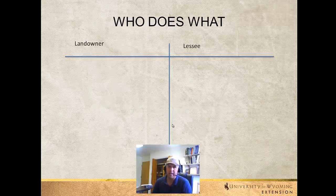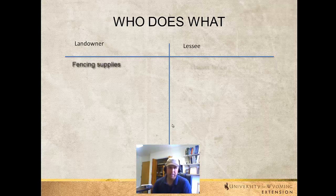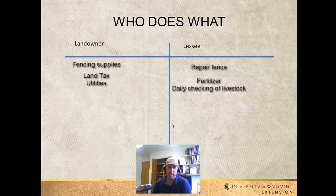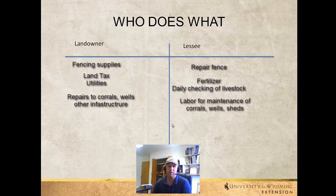An important thing to consider is who does what, and this is a great thing for the landowner and the lessee to sit down and go through together. A simple chart with the landowner on one side and the lessee on the other works well. On the landowner side you might see: paying for fencing materials while the lessee does the labor to repair the fence or walk the fences at the start of the year. The landowner is also probably responsible for paying taxes on the land and utilities. The lessee is probably responsible for things like fertilizer costs, doing daily checks of livestock to be sure water is available, while the landowner handles infrastructure upgrades like wells, pipelines, stock tanks, or maintenance of those items.